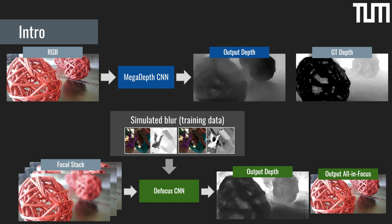To be able to use blur, we use a focal stack as input. A focal stack is a set of images taken from the same position — so you don't have to move your camera — but with different focus distances. The whole capture process takes only seconds.